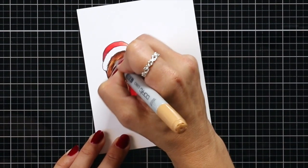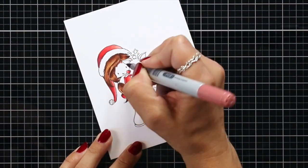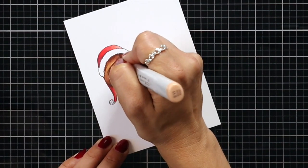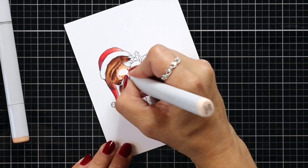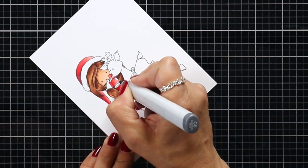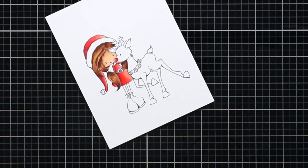For her skin I'm going to use E04, E11, and E01. I added that E04, which is the darkest color, right around the hairline because the hairline is going to cast that shadow down over the face, and then I just worked through the rest of the elements on her dress.